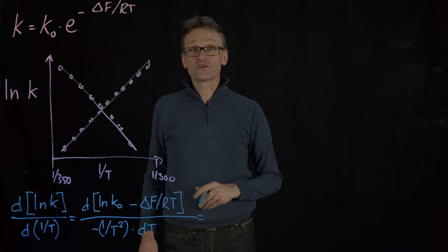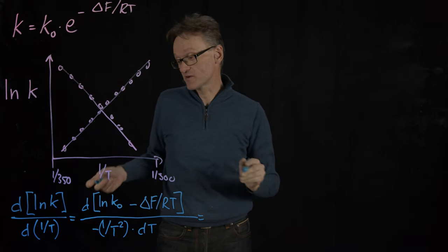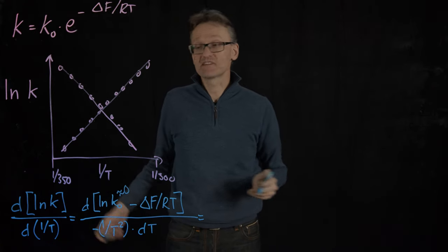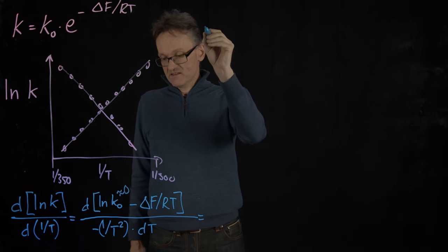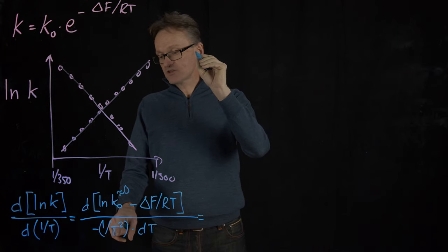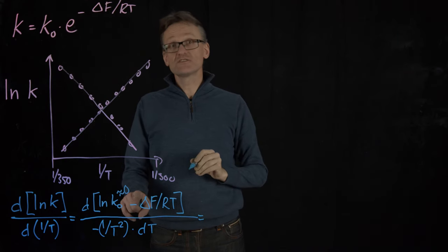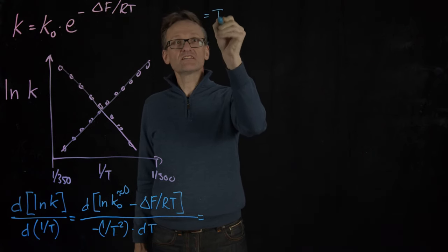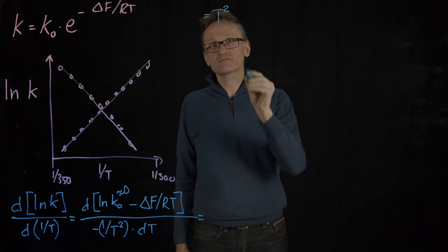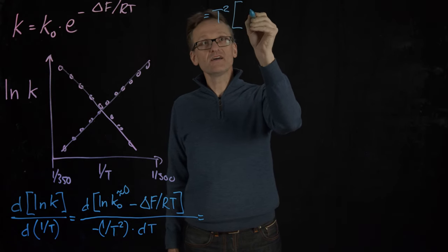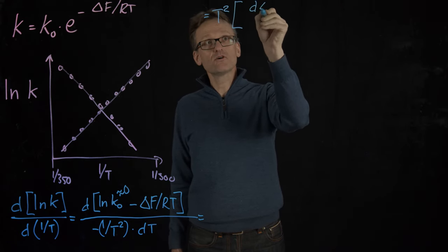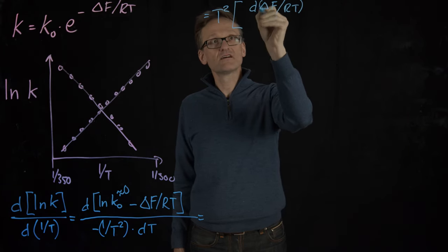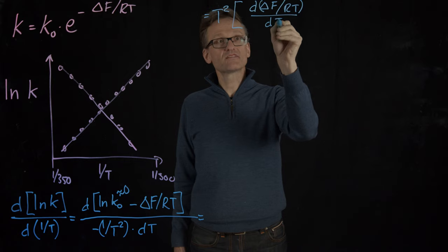But here's the beautiful part. k₀ is a constant that describes the fundamental process, so the derivative of it is roughly going to be zero. And minus 1 over T squared - those two minus signs cancel and then I get T squared in front of the expression. So here I get T squared multiplied by the derivative of delta F divided by RT with respect to T.